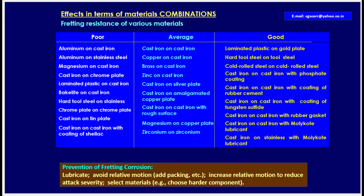Materials with good fretting corrosion resistance include: laminated plastic on gold plate, hot tool steel on tool steel, cold-rolled steel on cold-rolled steel, cast iron on cast iron with phosphate coating, cast iron on cast iron with coating of rubber cement, cast iron on cast iron with coating of tungsten sulfide, cast iron on cast iron with rubber gasket, cast iron on cast iron with Molykote lubricant, and cast iron on stainless steel with Molykote lubricant.